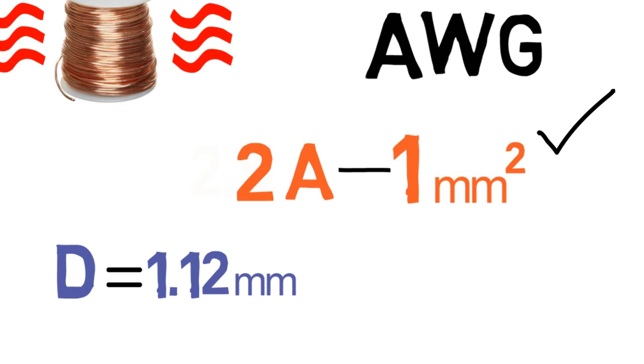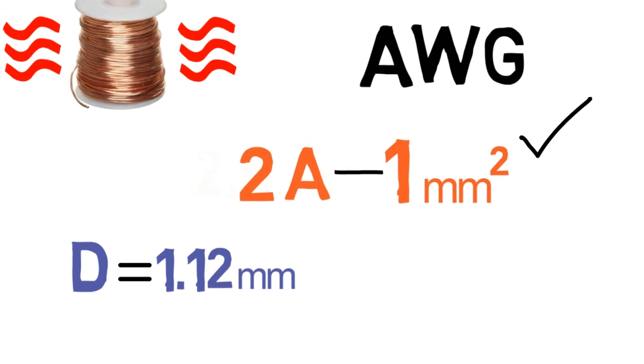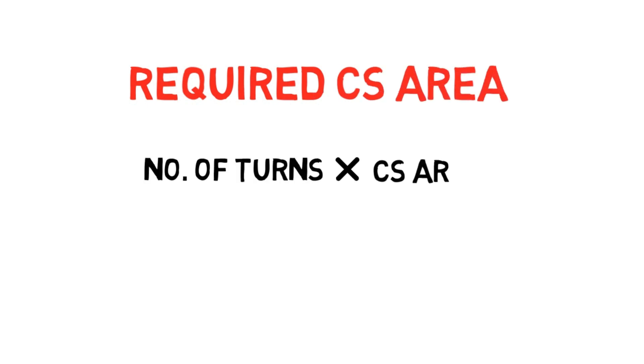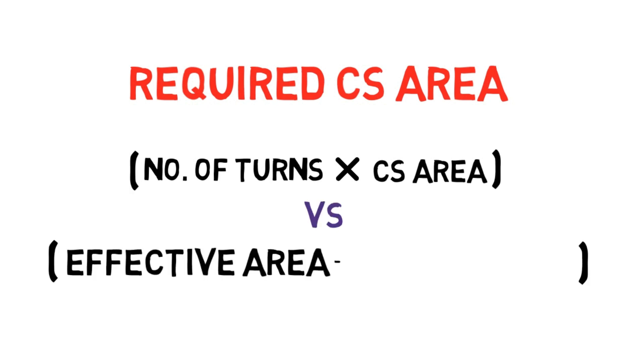We'll have calculated the number of turns, but there is one more doubt: whether these turns will fit on the core or not. To find it out we need to compare the required area of the wire to be wound, which is number of turns multiplied by cross-sectional area of the wire, with effective area of the core.